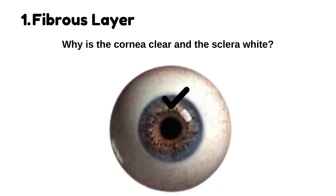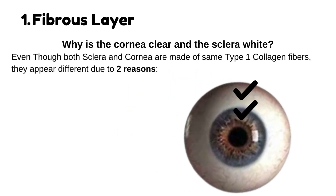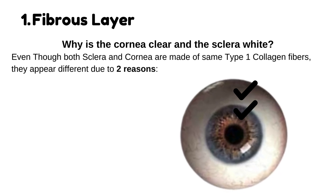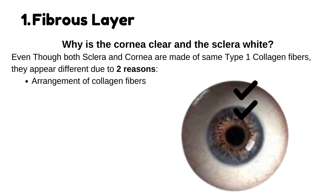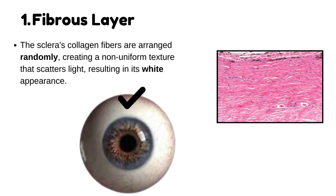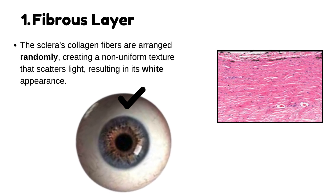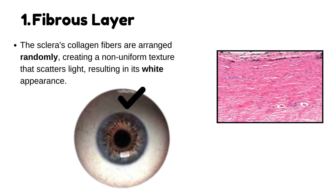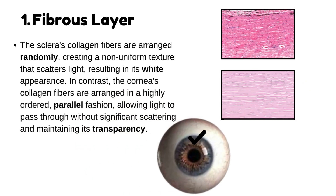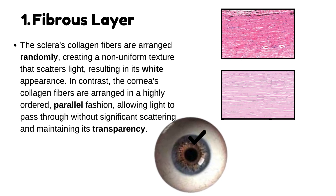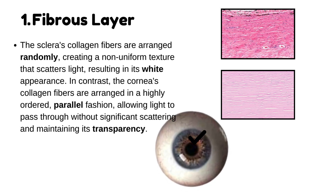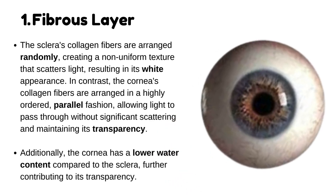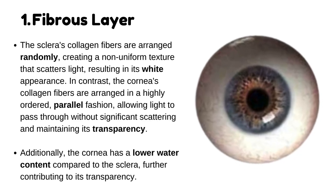Why does the cornea appear clear while the sclera is white, even though both are made from the same collagen? Even though both are made of the same type 1 collagen fibers, they appear different for two reasons. The sclera's collagen fibers are arranged randomly, creating a non-uniform texture that scatters light, resulting in its white appearance. In contrast, the cornea's collagen fibers are arranged in a highly ordered, parallel fashion, allowing light to pass through without significant scattering. Additionally, the cornea has a lower water content compared to the sclera, further contributing to its transparency.